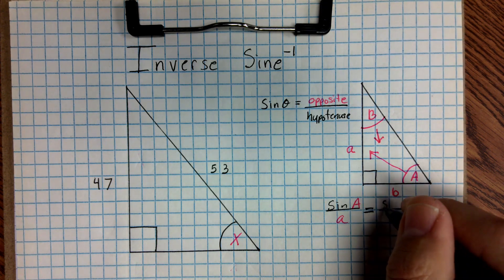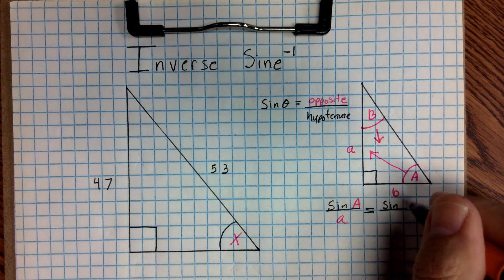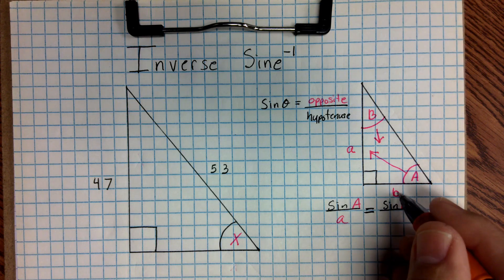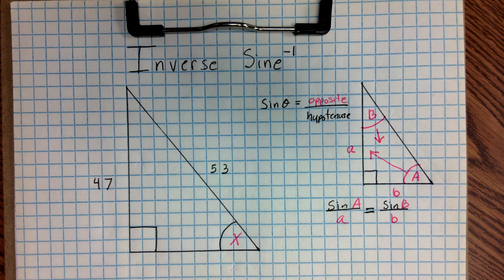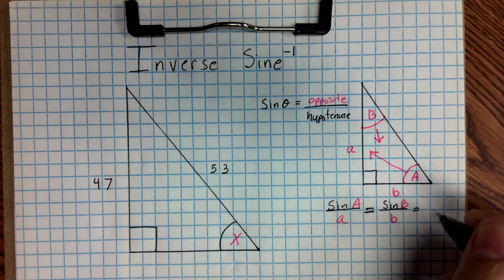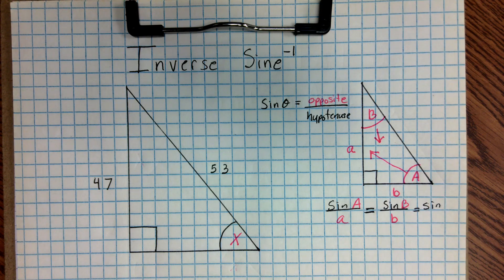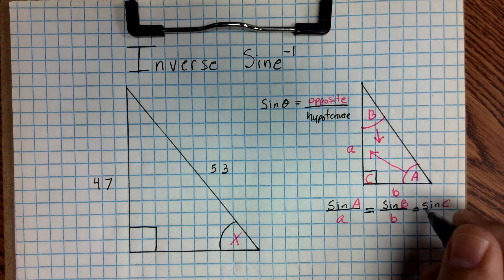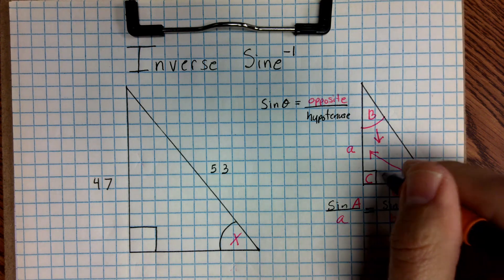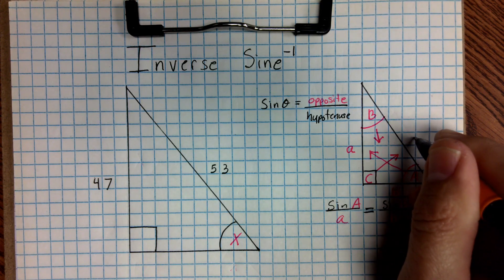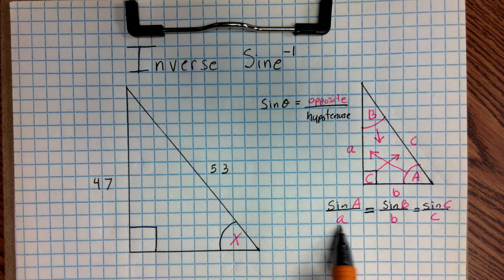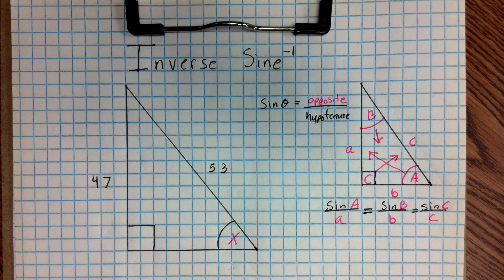And there's going to be B right there. So this would be sine B, I'm going to put the big B right, this angle right here, over this little B, which is the side of the triangle, is equal to sine C over the side of the triangle that's opposite C, which is the hypotenuse. So we've been using this rule, and we're going to use it again.